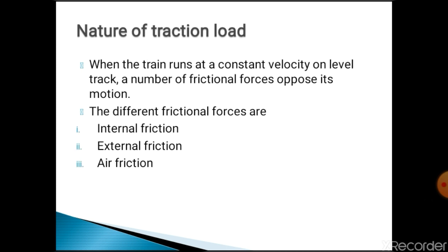Nature of traction load. When the train runs at a constant velocity on a level track, a number of frictional forces oppose its motion. There are three different frictional forces: internal friction, external friction, and air friction. Internal friction refers to friction at bearings, guides, etc. External friction is the friction between wheels and rails. Air friction is the interaction between air and the motion of the train, where the motion of the train opposes the direction of the wind. All these frictional forces together are called train resistance.